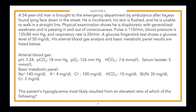Onto our third question. Answer choices are covered, and the lead-in is: This patient's hypoglycemia most likely resulted from an elevated ratio of which of the following? Let us know how many steps you think this question requires and what the key words in that lead-in are, then we'll read the vignette together.